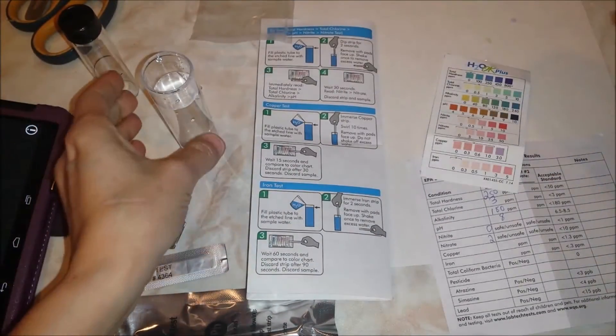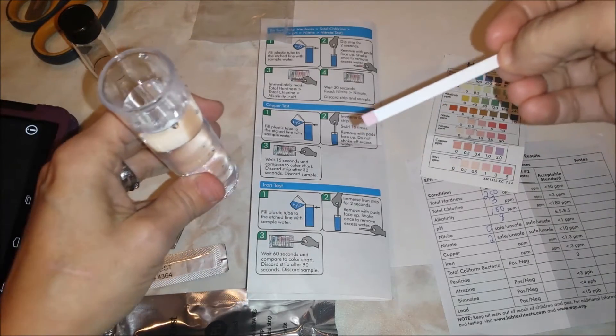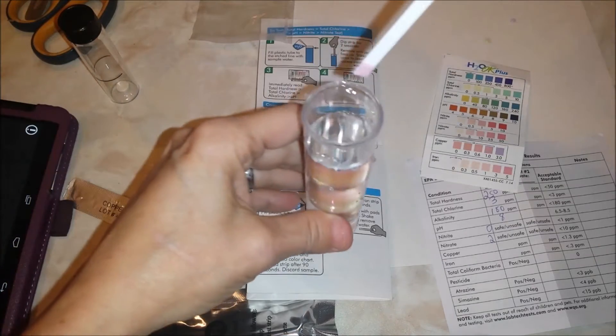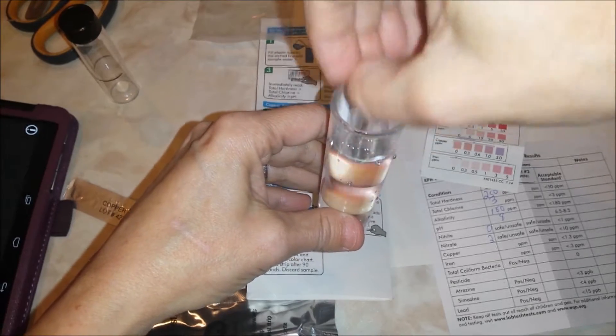So dip it in, swirl ten times, remove face up, count 15 seconds and read. Dip it in: one, two, three, four, five, six, seven, eight, nine, ten.